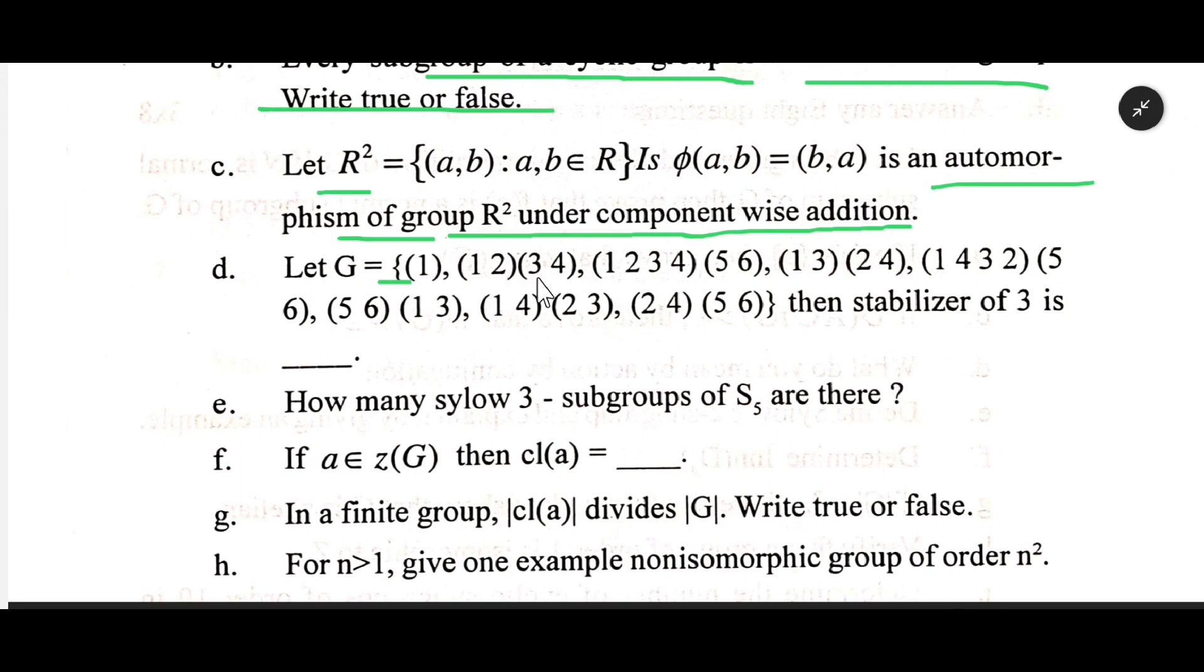Let G = {(1), (1 2)(3 4), (1 2 3 4)(5 6), (1 3)(2 4), (1 4 3 2)(5 6), (5 6)(1 3), (1 4)(2 3), (2 4)(5 6)} then stabilizer of 3 is...